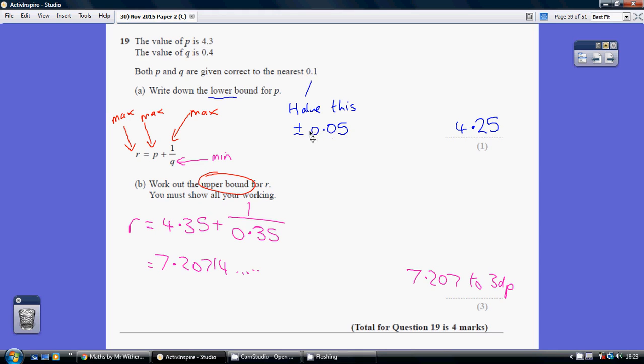So deduct 0.05 off the 4.3, because we're going for the lower bound. So 4.3 take away 0.05 is 4.25.